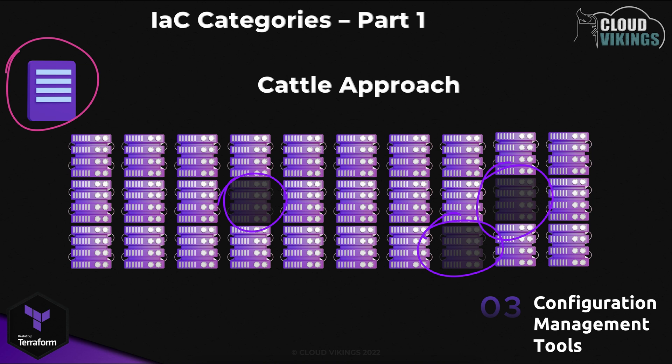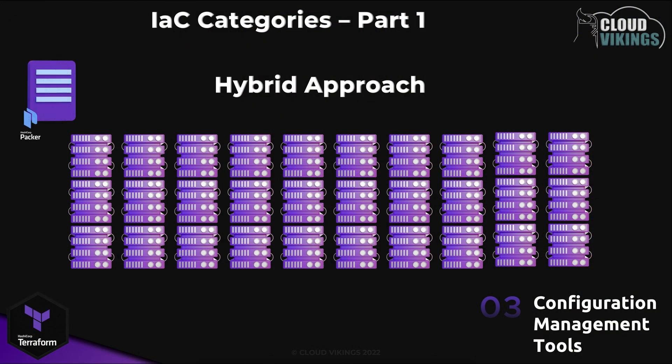Hybrid solutions of the pets and cattle approach can also exist, allowing you to take advantage of the benefits of both — although you're also subject to some of the cons of both approaches. Maybe you have a workload where the application and its request handling don't easily allow for systems to be replaced without significant interruption to the business. Maybe these servers have very large operating systems and software installation footprints, where deploying from scratch and doing all the software installation even through scripts or configuration management could potentially take hours. One example approach here is perhaps creating a base image with a tool like Packer to have your large core operating system and software installations already baked in, avoiding large downloads and installation steps on each server individually.